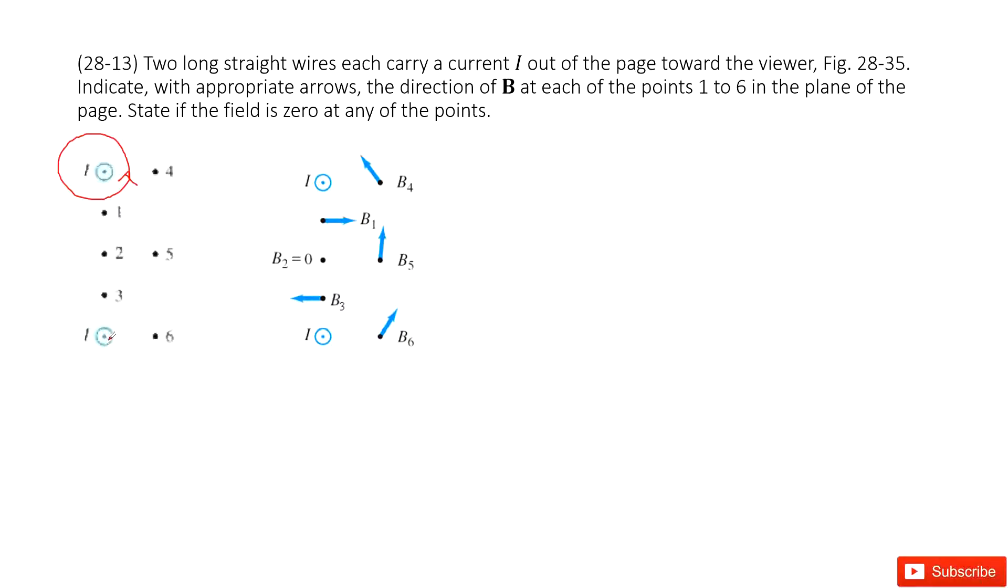Similarly, the current for this wire also moves outward, out of the paper. We can draw the magnetic field as it encircles, following this way.